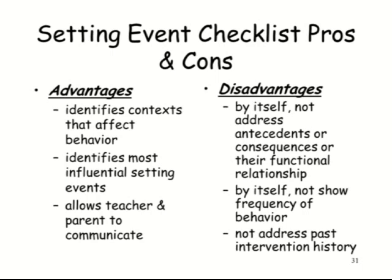To sum up setting event checklists: the advantages are they're really good at identifying setting events most likely to affect a behavior, they can give you information about the context of a behavior, and they can be useful for communication between home and school. The disadvantages are that by themselves they're not going to show you the function of a behavior — you need to use them in addition to indirect and direct functional assessment observations. They're also not a useful tool for looking at frequency of behavior or things that have been done to address a behavior in the past. They have a very specific purpose, and when designed well they serve that purpose very well.